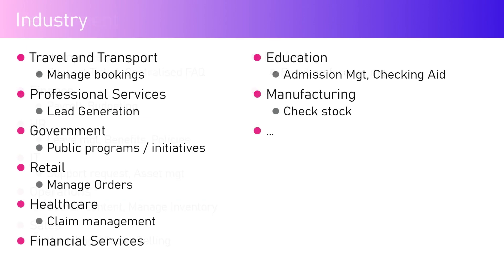Moving from departments to industries: Travel & Transport, Professional Services, Government, Retail, Healthcare, Financial Services, and Education all have specific sets of agents. For Travel & Transport, it's about managing bookings — flights, hotels, refund requests. For Professional Services, it's about generating leads from trade shows or conferences, coordinating with leads, and eventually converting them into opportunities.